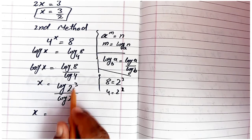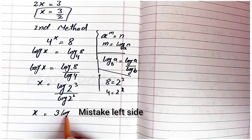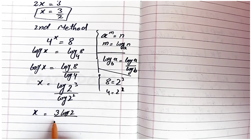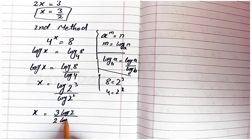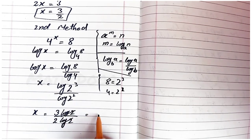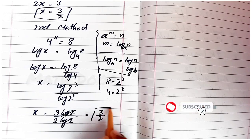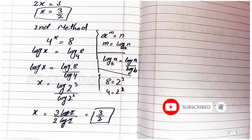Taking the power to the left of the log: 3 log 2 over 2 log 2. The log 2 terms cancel, and the equation becomes 3 over 2. This is our answer.